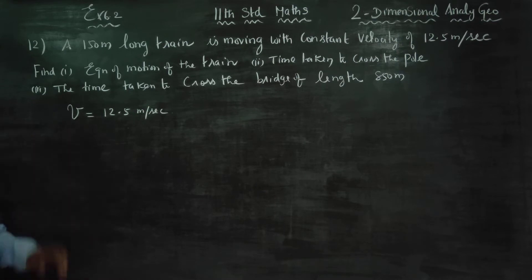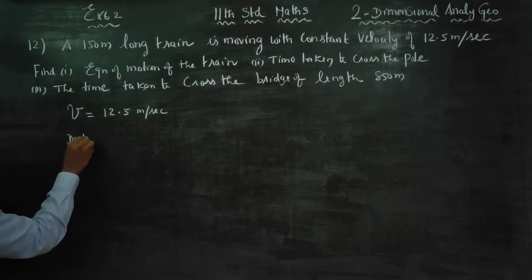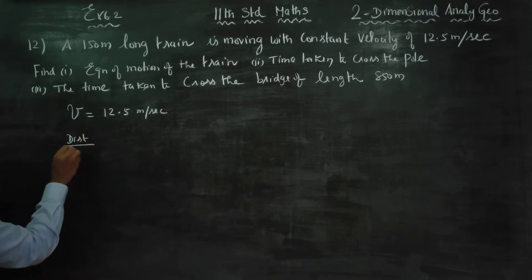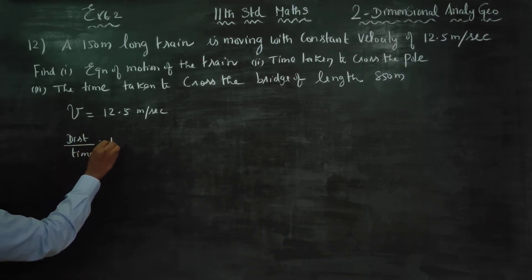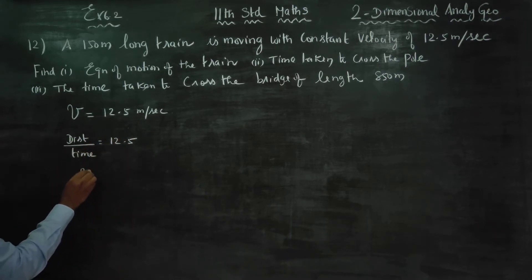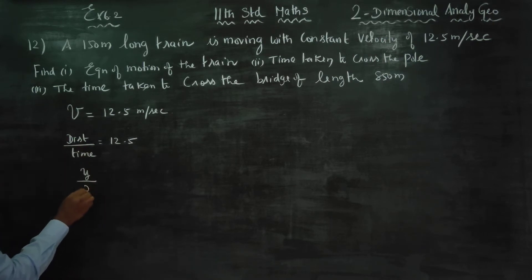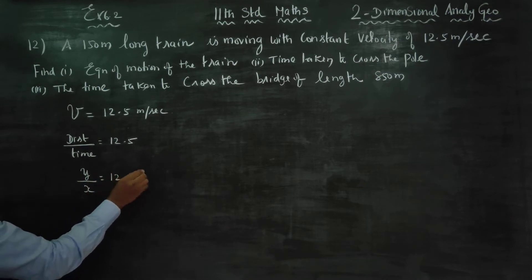What is the formula for velocity? Velocity is equal to distance traveled by time. Distance traveled by time is equal to velocity, 12.5. I am going to change distance as y and time as x, so y by x is equal to 12.5.